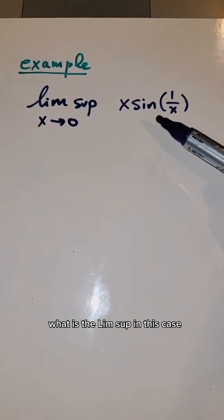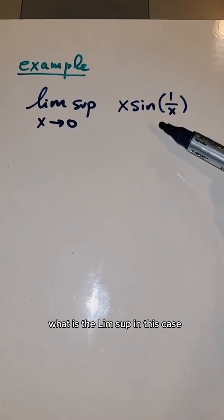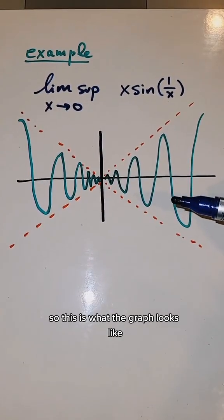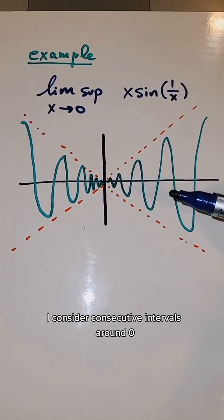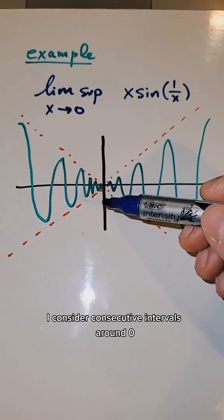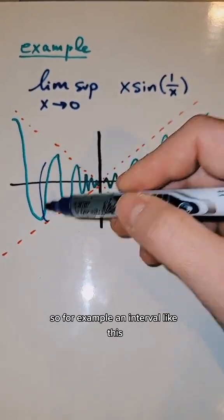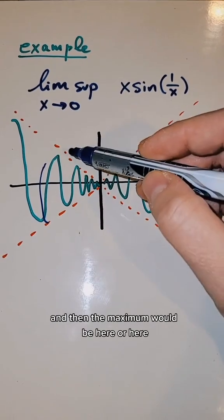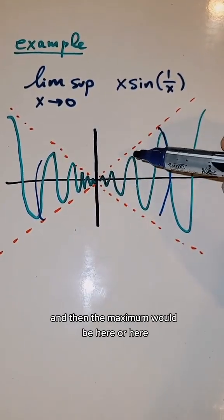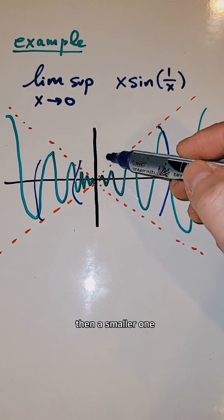For example, take this function. What is the limsup in this case? So this is what the graph looks like, and then to do the limsup, I consider consecutive intervals around zero. For example, an interval like this, and then the maximum would be here or here. Then a smaller one.